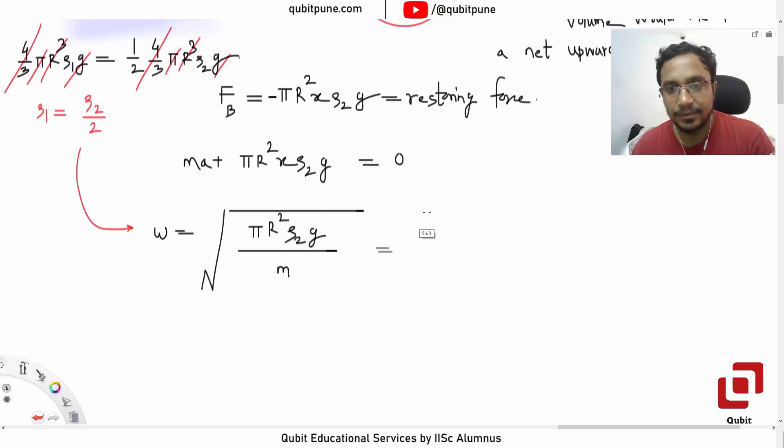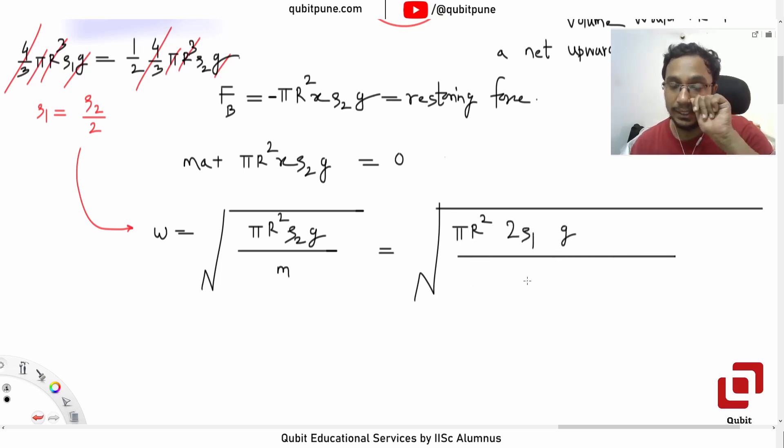If the fluid is not dense enough to support the weight, it won't float. So ρ₁ = ρ₂/2 or ρ₂ = 2ρ₁. We use this relation here. Continue with this: k = πr²·(2ρ₁)g. Here m is the mass of the sphere: (4/3)πr³ρ₁, volume into density. Now you realize ρ₁ is getting cancelled.